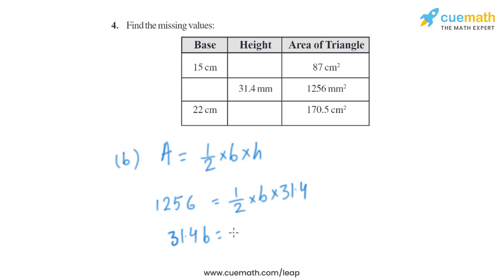So from there we will get the value of B. B will be basically 2512 divided by 31.4, which is same as 80. So it will be 80 millimeter.